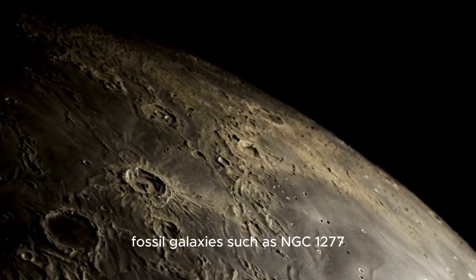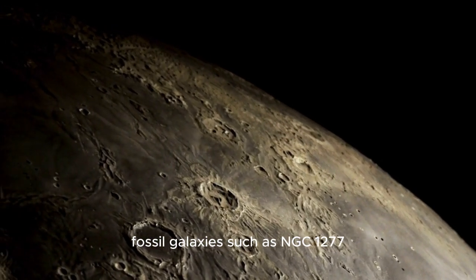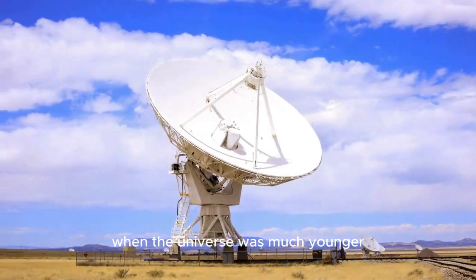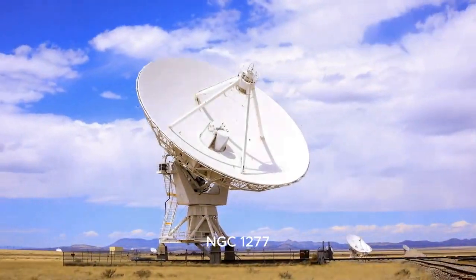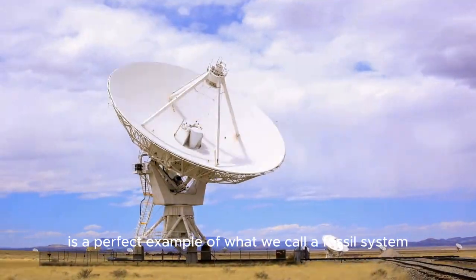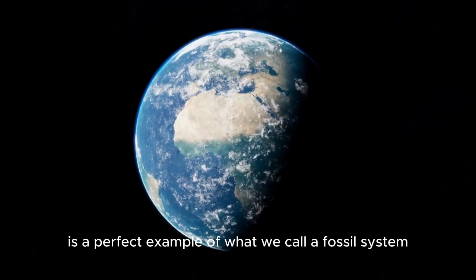Fossil galaxies, such as NGC 1277, offer scientists a glimpse into a time when the universe was much younger. NGC 1277, located about 220 million light-years from Earth, is a perfect example of what we call a fossil system.